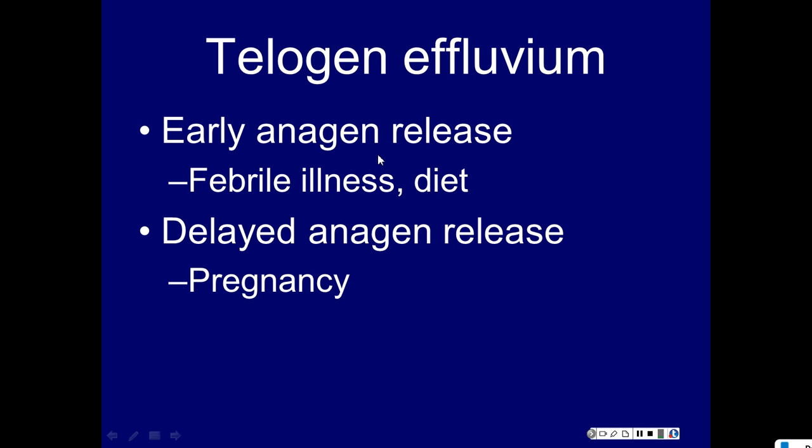When there is a big body stress, you have many hairs that were supposed to grow for a thousand days. The body will put more hair into resting phase rather than stop making blood or growing. Through evolution, hair is expendable during periods of stress. So you take many hairs and put them into resting phase; a hundred days later they come out and shed. That is your usual telogen effluvium.